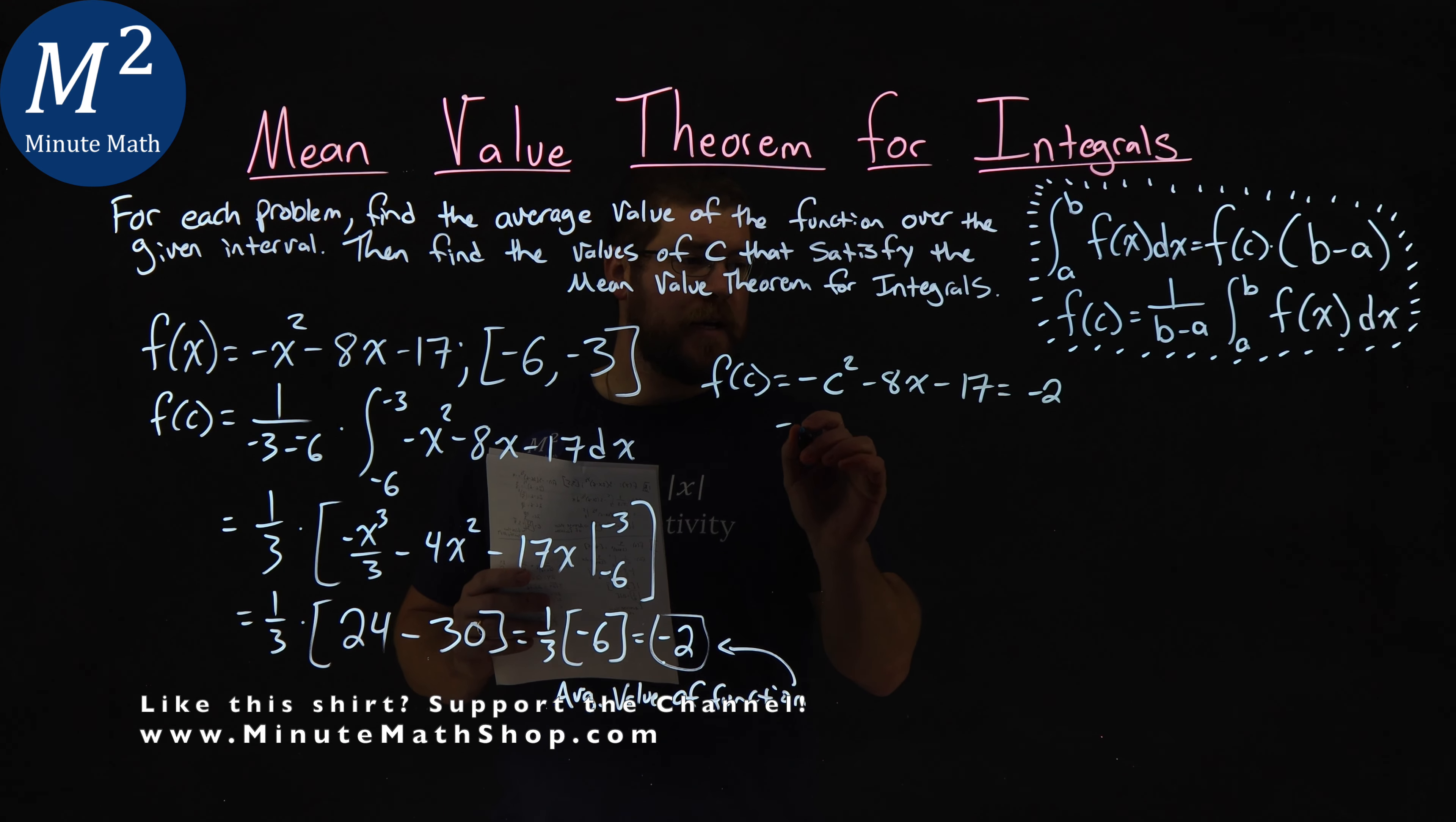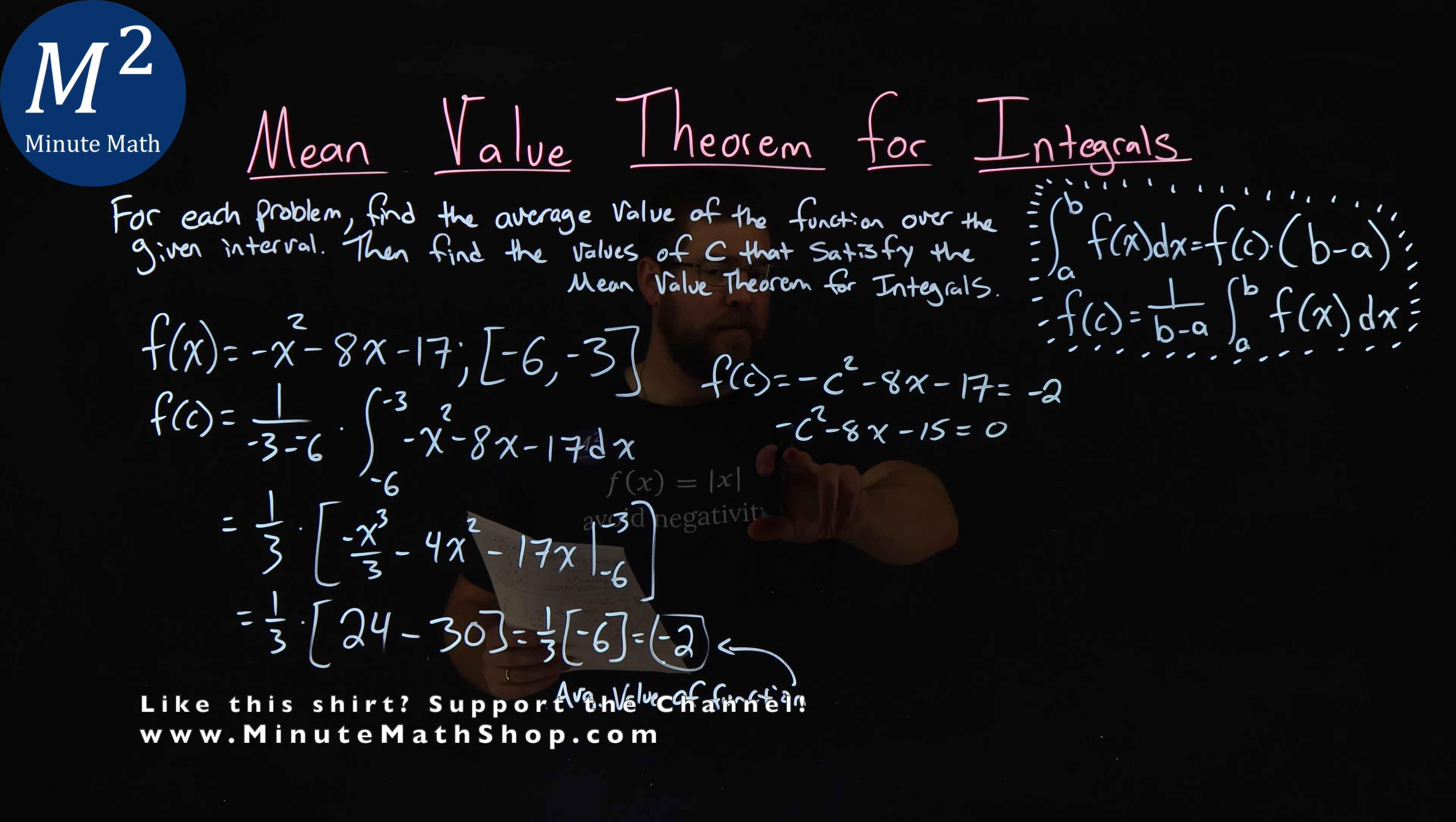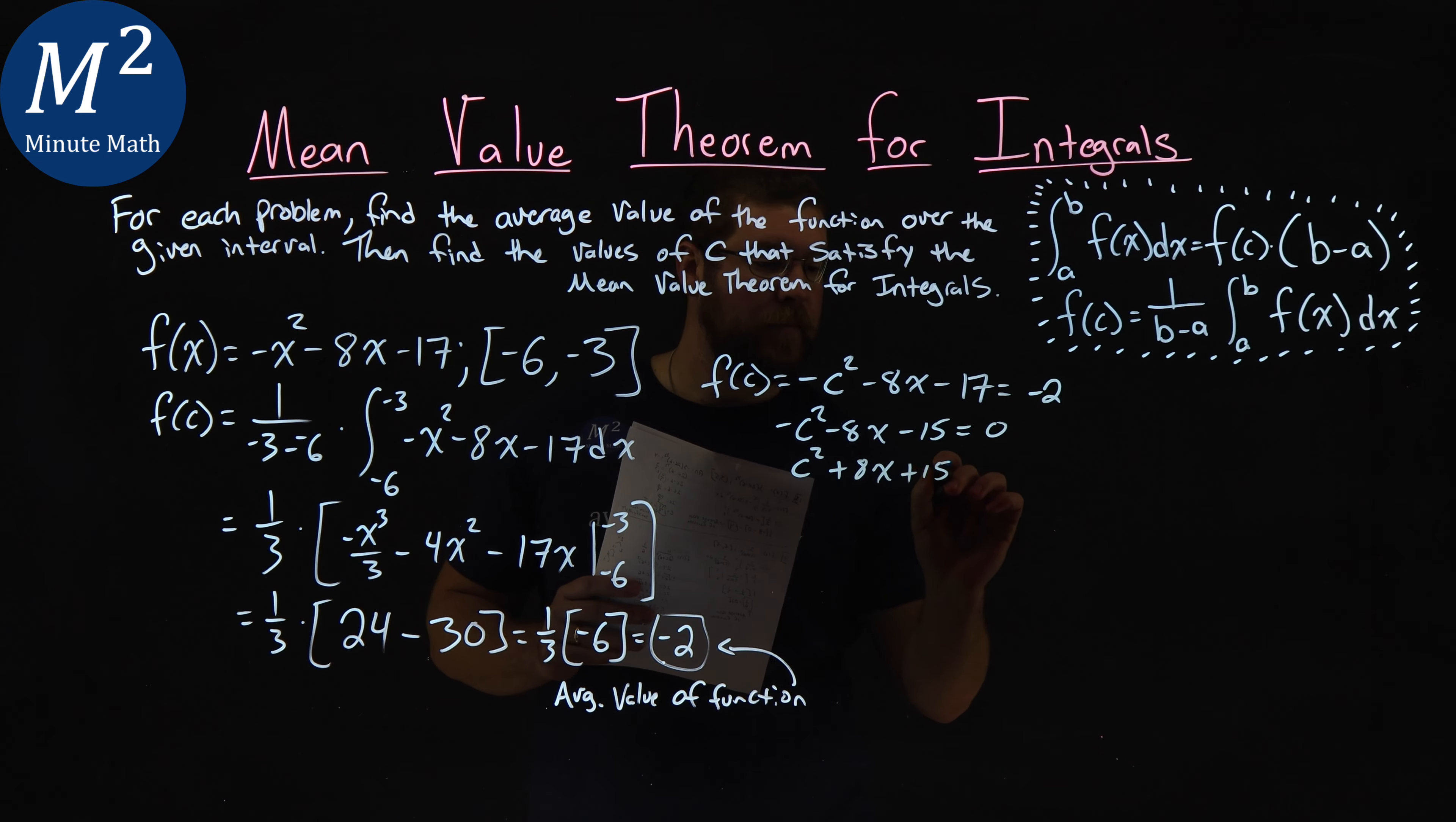We have negative c squared minus 8c. We add 2 to both sides and we have negative 15 equals 0. Now I like to deal with a positive c value up front, so multiply everything by negative 1: c squared plus 8c plus 15 equals 0.